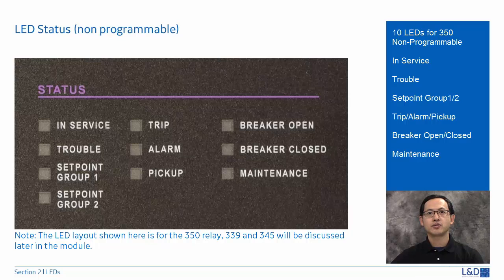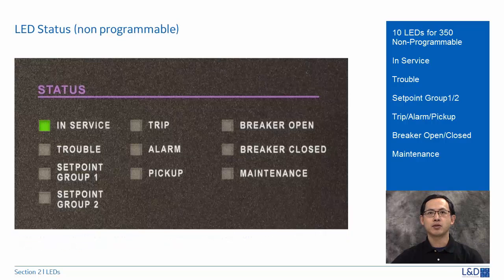In-service LED will turn on to green when the relay is set to ready in the setup menu and no major self-test error has been detected. Trouble LED will turn on to orange when the relay is not programmed or upon detecting a major self-test error.